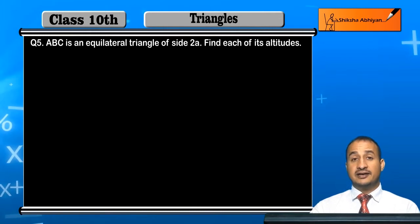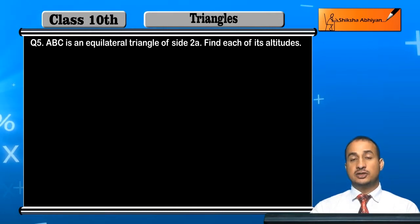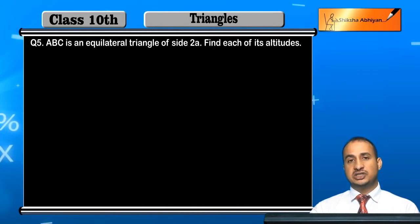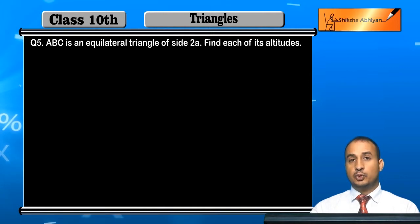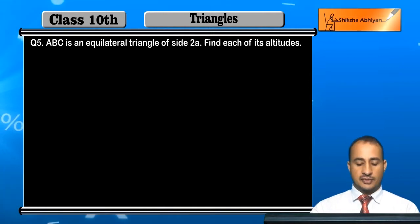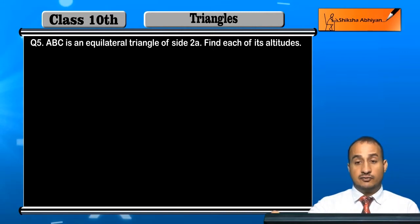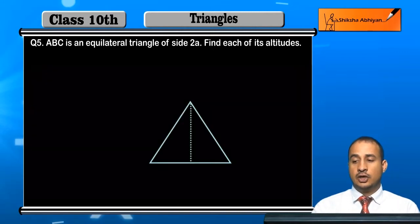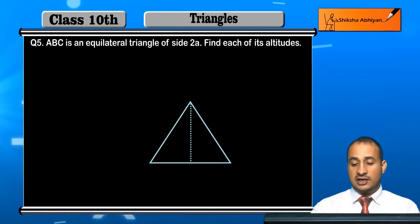Draw a perpendicular from one vertex to the opposite side — that is the altitude. Such a perpendicular also bisects the opposite side. Let us see how we can prove and find it here.